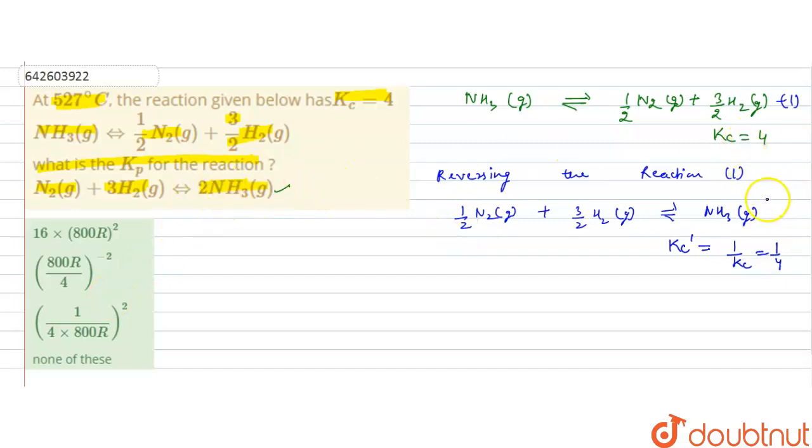If we multiply reaction 2 by 2, that will give us N2 gaseous plus 3H2 gaseous. It will form 2NH3 gaseous. Now this is the same reaction as its reaction.